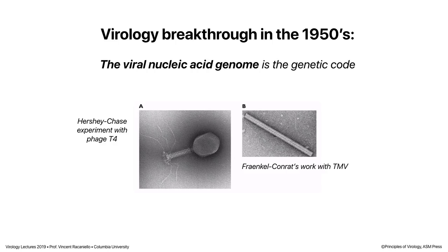It wasn't until the 50s that people showed that the nucleic acid of viruses is the genetic material. There were two separate studies. On the left, the Hershey-Chase experiment with phage T4 — its DNA was shown to be the genetic material. On the right, tobacco mosaic virus: Fraenkel-Conrat showed that the RNA of that virus is the genetic material. He extracted RNA from the TMV particle, put it into tobacco leaves, and it initiated an infection. He also separated the RNA and protein — the protein alone couldn't infect, but RNA plus protein reconstituted infectivity.